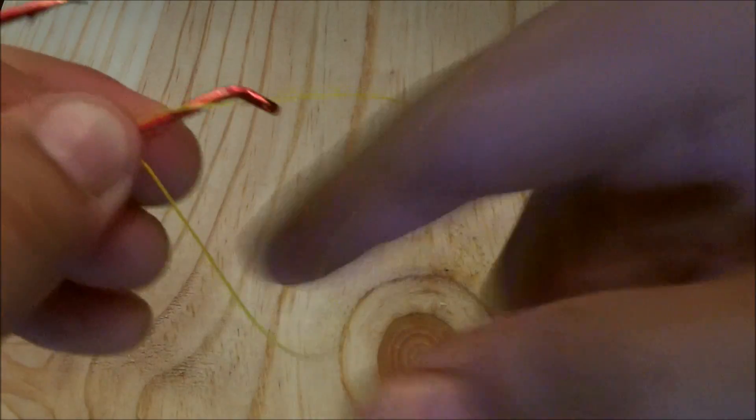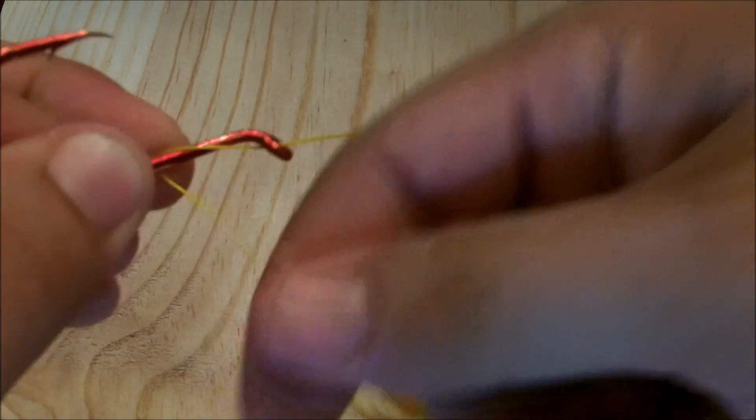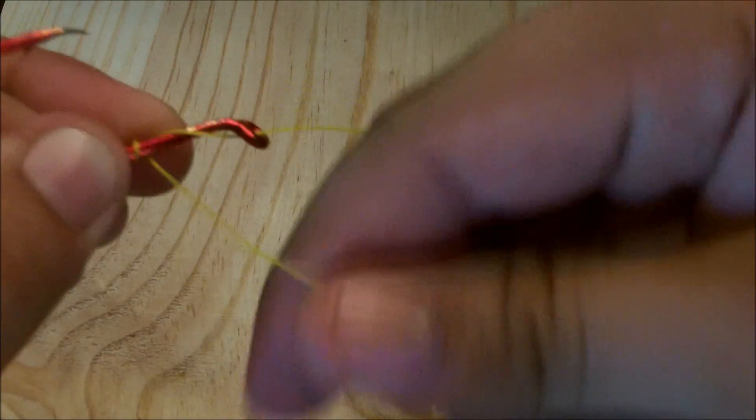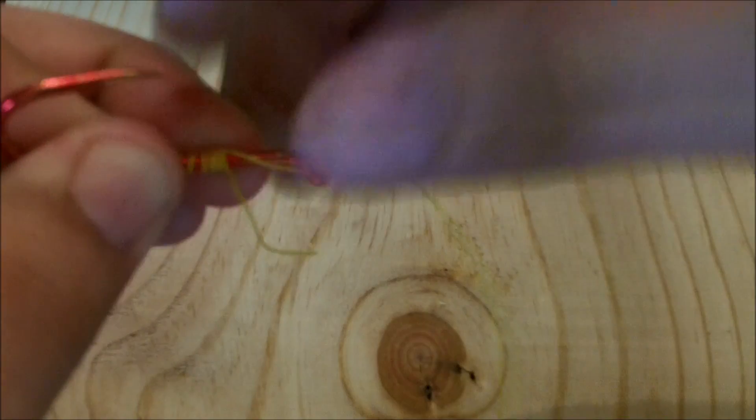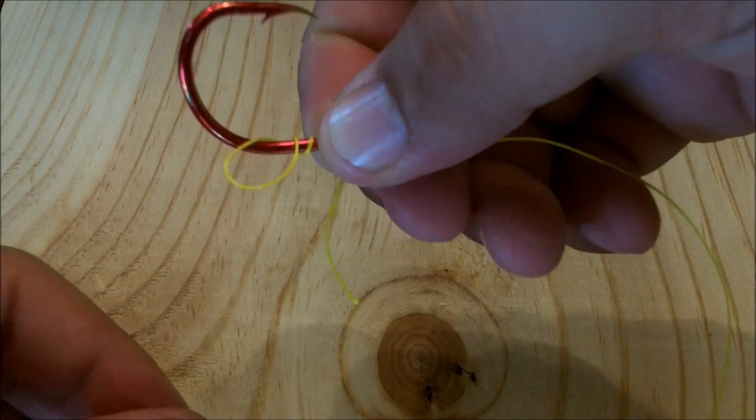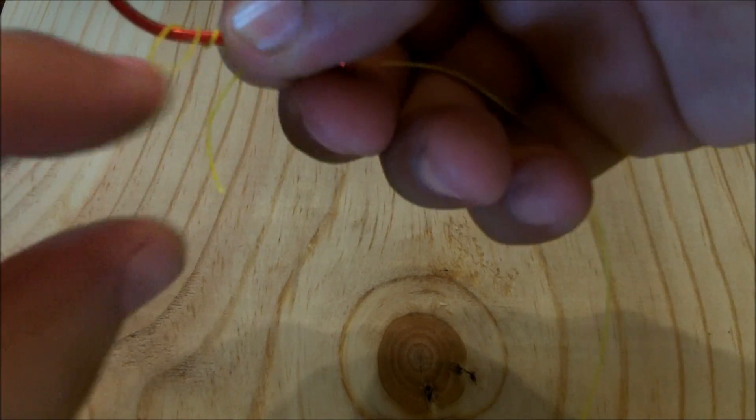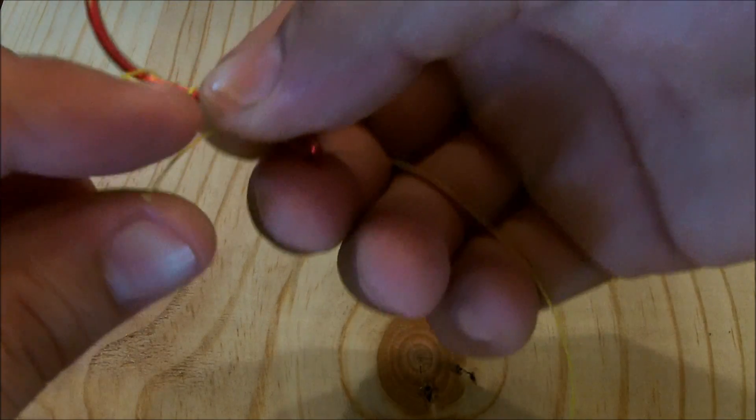And then just take that tag end and wrap it around the shaft and the line going through about 5 or 6 times at minimum. You can do 7, 8, 9, whatever you feel comfortable with. So now you've got your loop you made here and your tag end from wrapping around the shaft.